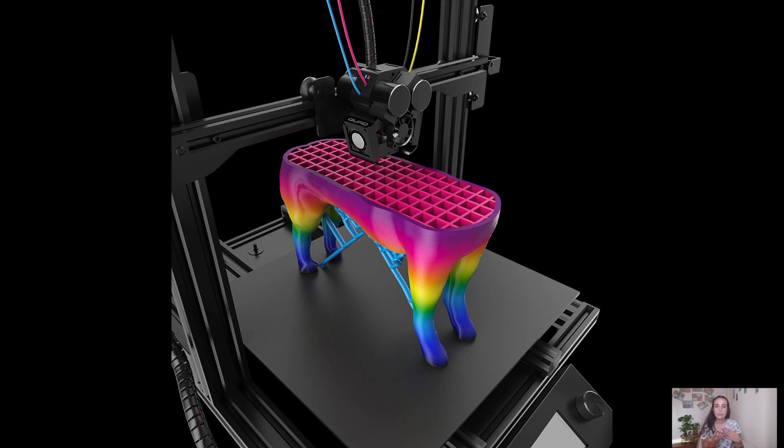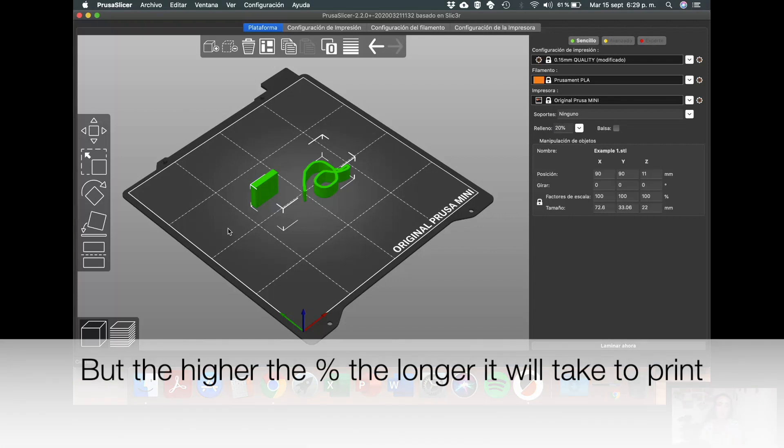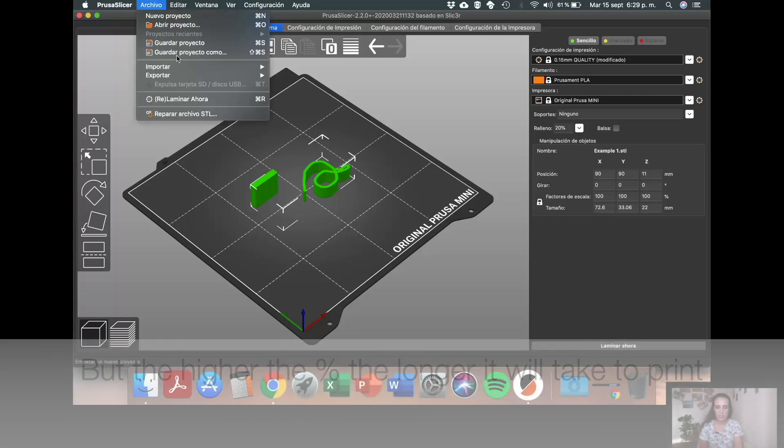And depending on how hard should your design be or not, or how light should it be or heavy, you can use a different percentage of filling. I would say that 50% is okay. If you need something stronger, maybe 20, 30 maximum. I haven't used anything higher than this. I would say 20 in this case.